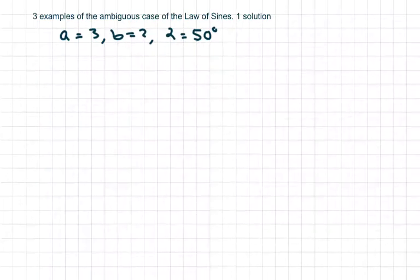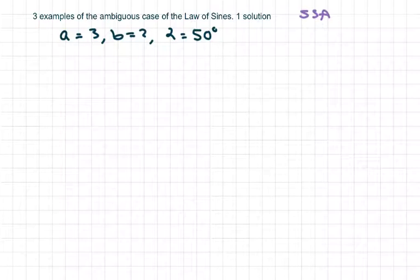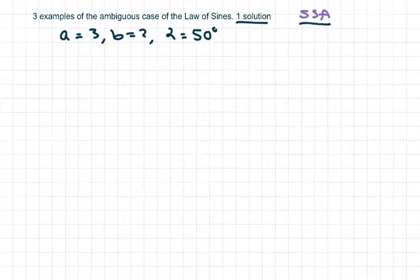Hi everyone. We're going to do three examples of the ambiguous case of the law of sines. That's where you have a side-side-angle triangle, so there's no anchor for one of the angles. As I stated in the previous video, you should watch the videos that have two solutions. But when I have the side-side-angle one, I go ahead and draw the two triangles.